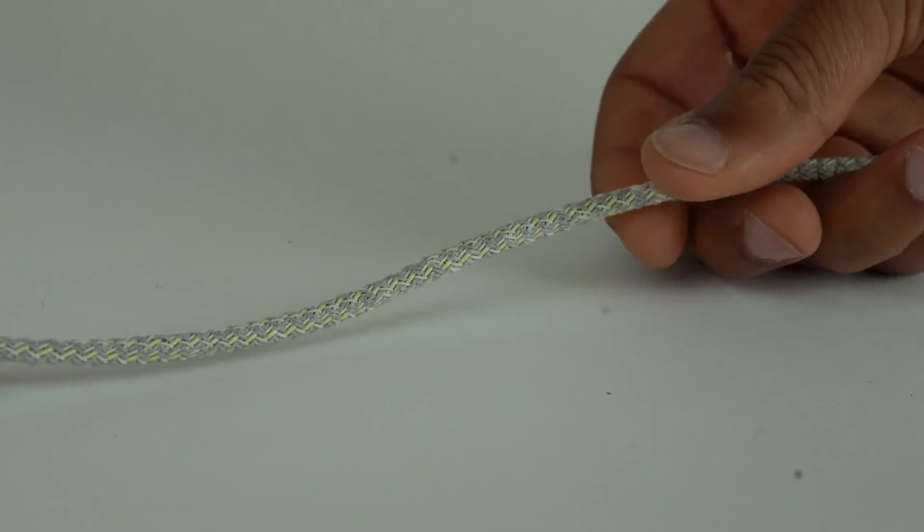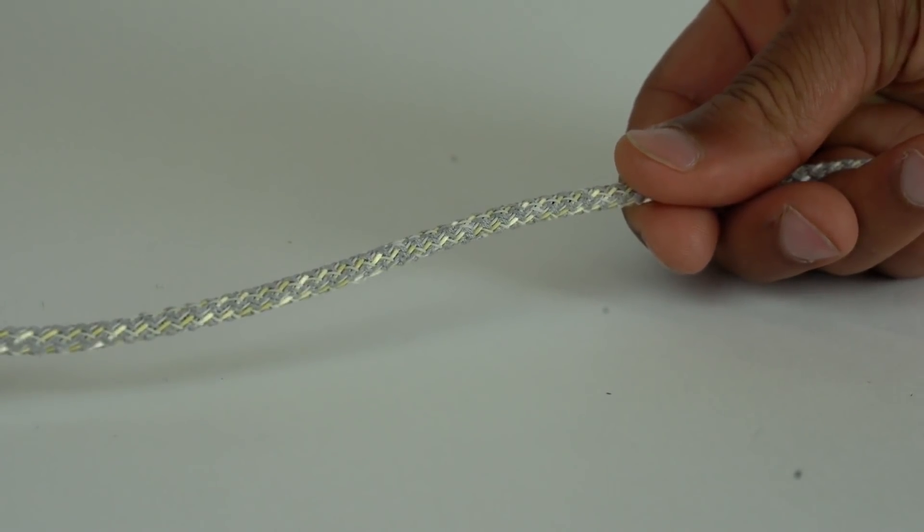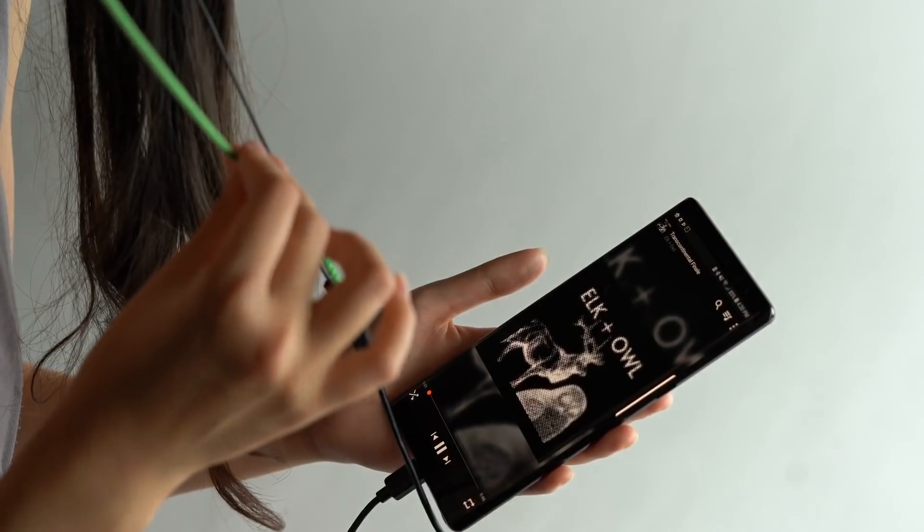The Iobraid interactive textile uses braided conductive yarns to sense proximity, touch and twist and embeds fiber optics for visual feedback.